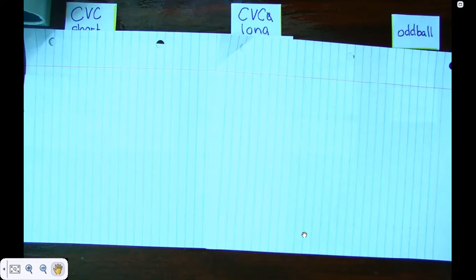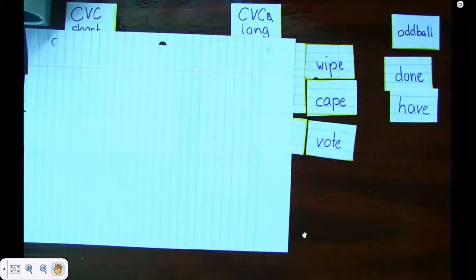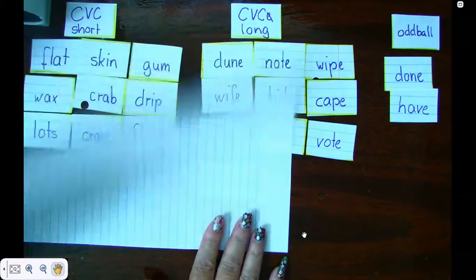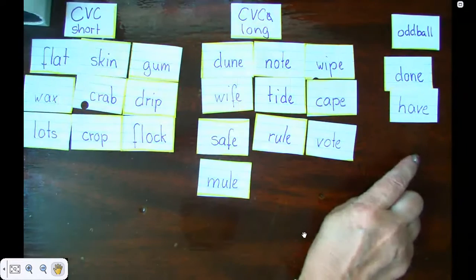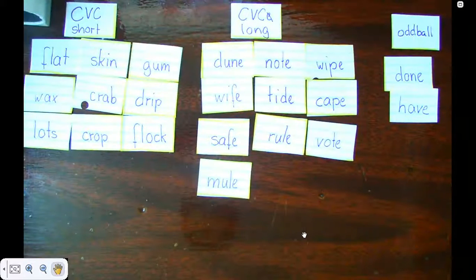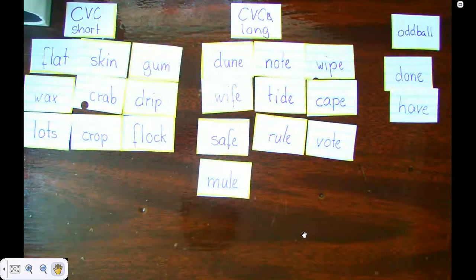Now that you've sorted your words, I'm going to unveil mine and I need you to check that you sorted them into the correct categories. Pay special attention to our oddballs that have the short vowel sound but have a silent e at the end. Now that you've sorted them, we're going to get our handy dandy notebook and we're going to write them down.